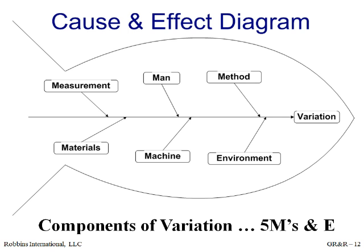Here is a cause and effect diagram, also known as a fishbone diagram, showing the components of variation — 5Ms and an E. Remember, the key to performing a Gauge R&R is to use the output to work on the element that is contributing the most variation. Don't spend a lot of time working on your process when the measurement system is your biggest problem.